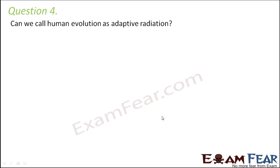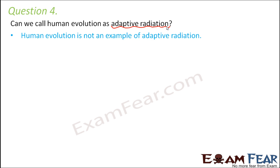Question number four: can we call human evolution adaptive radiation? Adaptive radiation is a process where from one species, evolution gives rise to multiple species. But in human evolution that doesn't happen. Human beings all belong to Homo sapiens — whether short, tall, fat, thin, dark, or fair, they all belong to the same species and can all interbreed. So human evolution is not an example of adaptive radiation.